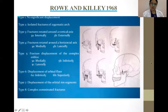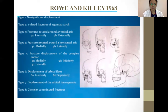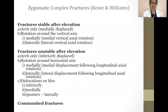The Rho and Klee classification: Type 1, no significant displacement. Type 2, isolated fractures of the zygomatic arch. Type 3, fractures rotated around the vertical axis — 3a internally, 3b externally. Type 4, fractures rotated around the horizontal axis — 4a medially, 4b laterally. Type 5, fracture displacement of the complex en bloc — 5a medially, 5b inferiorly, 5c laterally. Type 6, displacement of the orbital floor — 6a inferiorly, 6b superiorly. Type 7, displacement of the orbital rim fragments. Type 8, complex comminuted fractures.